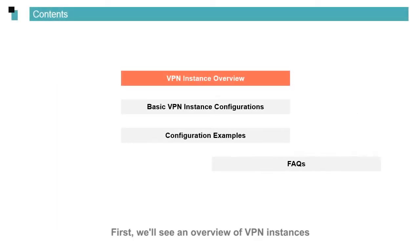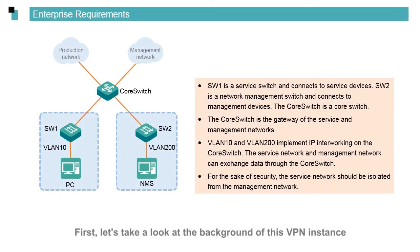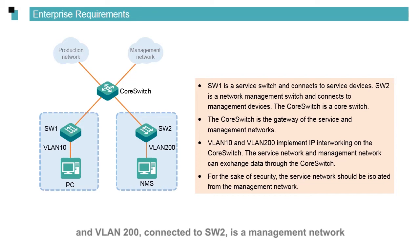First, let's take a look at the background of the VPN instance. In the middle, a core switch is deployed. Two access switches are used for Layer 2 link switching. VLAN 10, connected to SW1, is a service network. And VLAN 200, connected to SW2, is a management network.